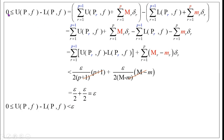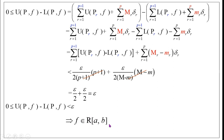Thus, 0 ≤ U(P,f) − L(P,f) < ε/2 + ε/2 = ε. Hence, by the necessary and sufficient condition for a bounded function to be Riemann integrable, f is Riemann integrable. That is, f ∈ R[a, b]; f is Riemann integrable on the closed interval [a, b].